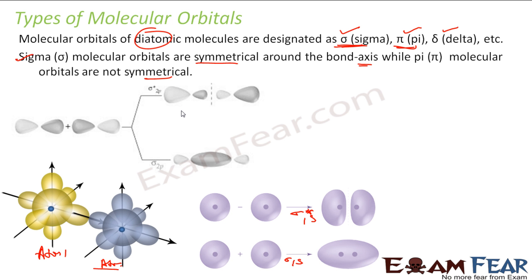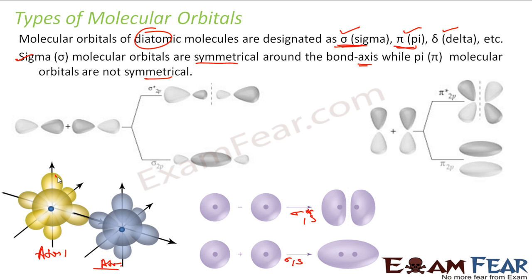Similarly, the other two p orbitals will have a pi bonding molecular orbital. These two p combine to form a pi bonding molecular orbital and a pi anti-bonding molecular orbital.